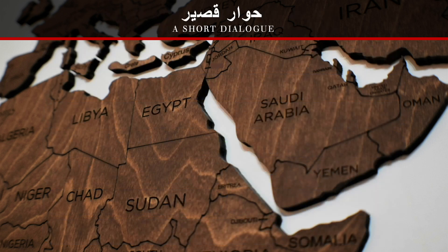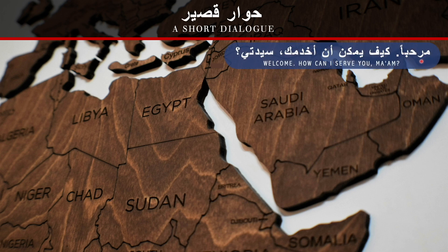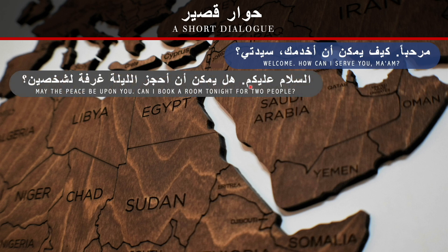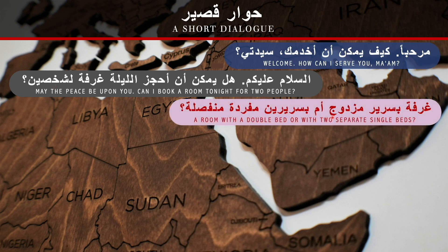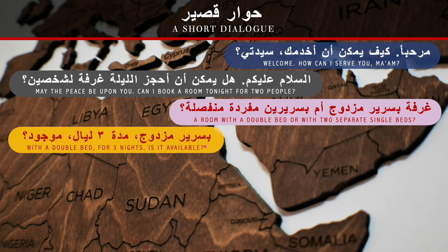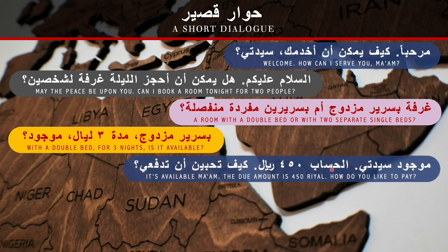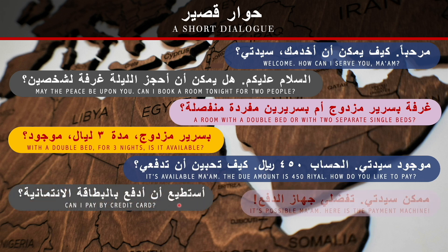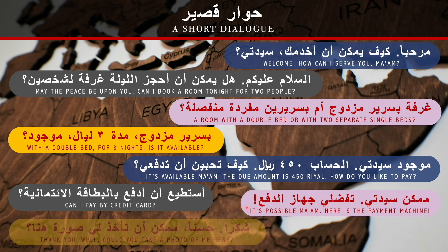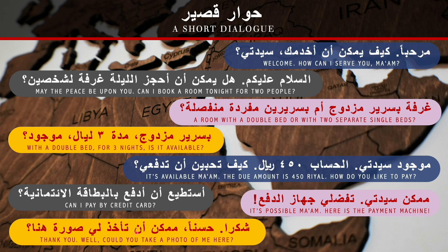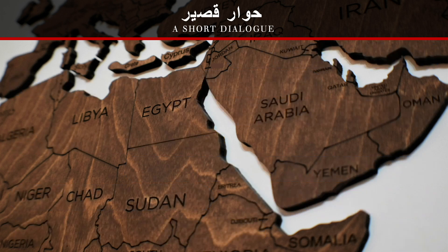Now the dialogue in Modern Standard Arabic. — مرحبا. كيف يمكن أن أخدمك سيدتي؟ — السلام عليكم. هل يمكن أن أحجز الليلة غرفة لشخصين؟ — غرفة بسرير مزدوج أم بسريرين مفردين منفصلين؟ — بسرير مزدوج، مدة ثلاثة ليالٍ. — موجود سيدتي. الحساب 450 ريال. كيف تحبين أن تدفعي؟ — أستطيع أن أدفع بالبطاقة الائتمانية. — ممكن سيدتي. تفضلي جهاز الدفع. — شكراً. — ممكن أن تأخذ لي صورة هنا؟ — أكيد.